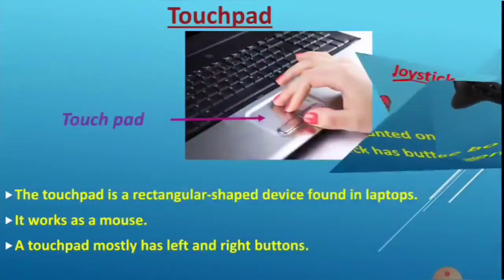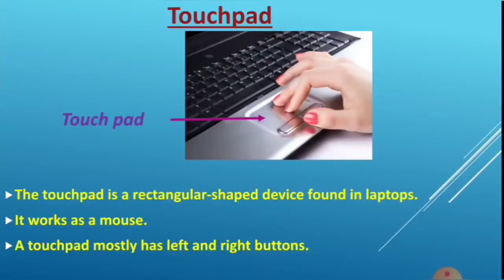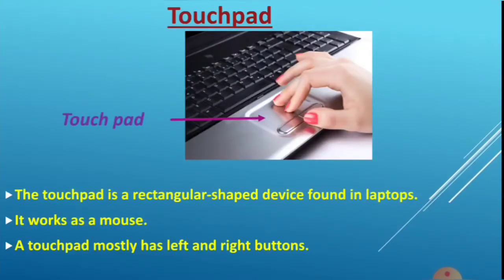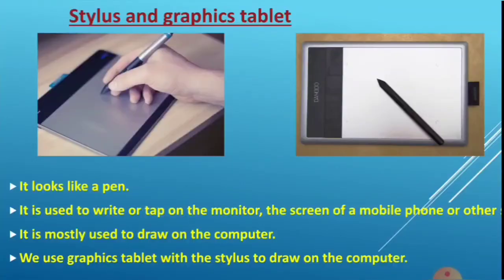Next is the touchpad. The touchpad is a rectangular-shaped device found in laptops. It is one type of mouse for laptops and mostly has left and right buttons. Next is the stylus and graphics tablet. It looks like a pen and is used to write or tap on the monitor screen or a mobile screen.